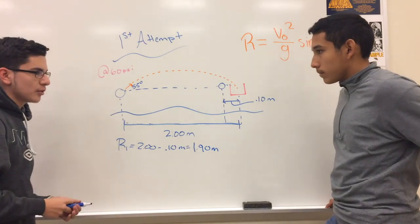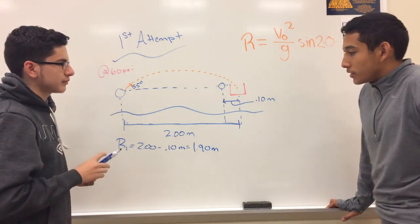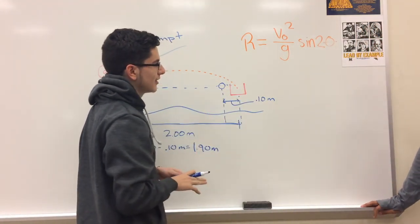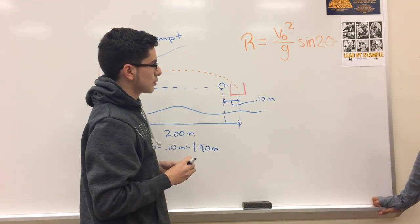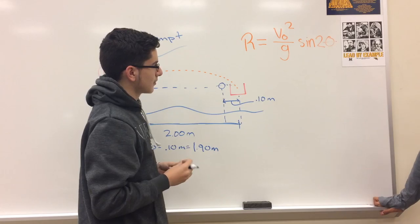Alright Fernando, so what equation would we use? We'd use the range equation, which is up here, which is r equals initial velocity, or v-naught squared over g times sine two theta.